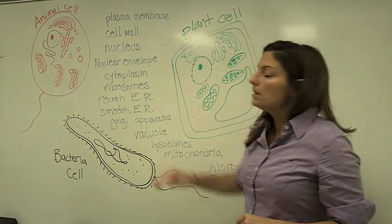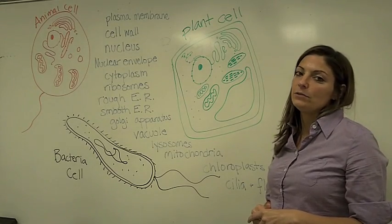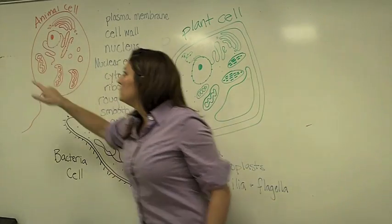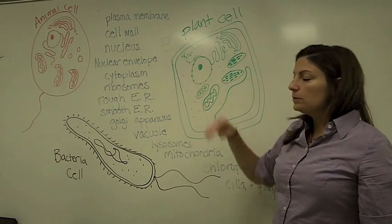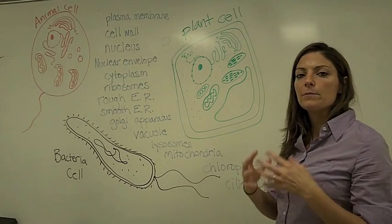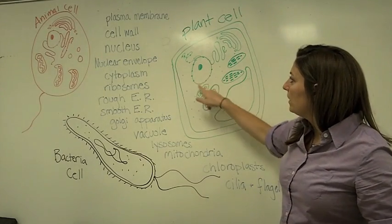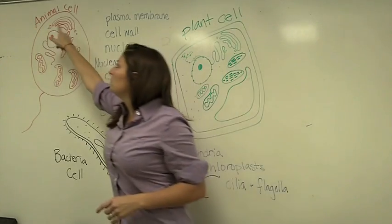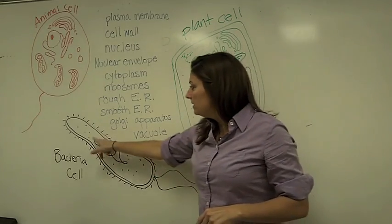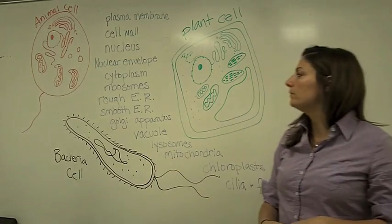A nucleus. You might remember from class today that only eukaryotic cells have a nucleus. So only the animal cell and the plant cell have a nucleus. It's this big kind of circle thing, and that's where the DNA is held. Sometimes it's called the control center of the cell because that DNA is the genetic information. The nuclear envelope surrounds the nucleus in both the plant and animal cell. The bacterial cell doesn't have a nucleus — the DNA is just free-floating there, so there's no nuclear envelope surrounding it.